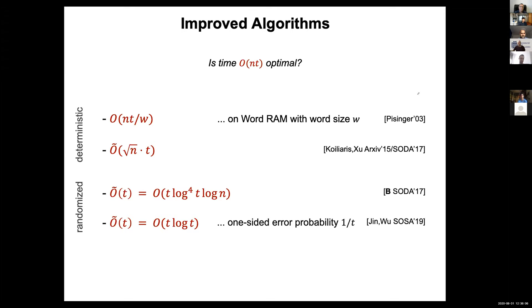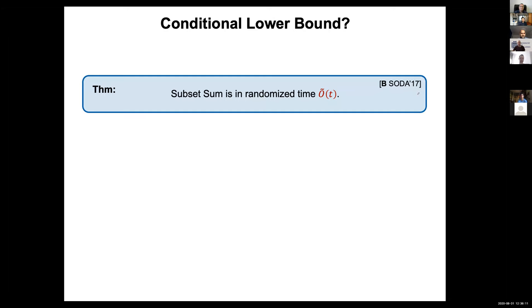So you can actually shave off this factor n: subset sum is in randomized time Õ(t).